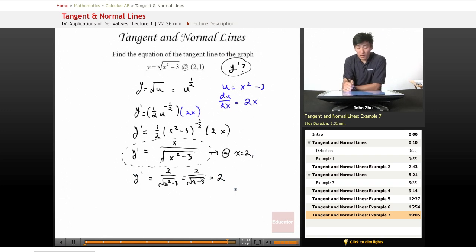So once again, we just apply the equation, the form for a tangent line equation. So y minus 1 equals slope 2 times x minus 2.